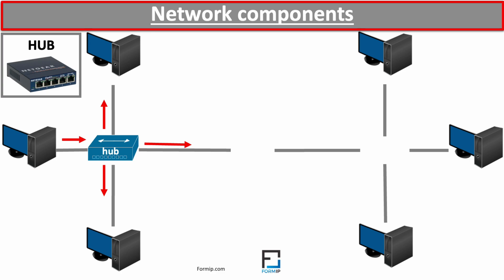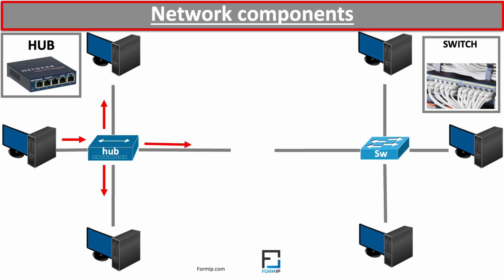That's why the switch was introduced. The switch is very similar to a hub, except that it is smart — the switch learns the physical addresses of the devices connected to it and keeps them in memory in a table. When a data packet arrives on the switch, it will be directed only to the port intended for it. This is the main difference between a hub and a switch, and why the switch is much preferred, as it considerably reduces unnecessary traffic on the network.